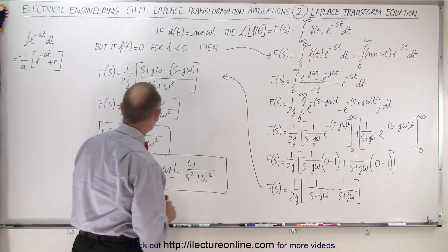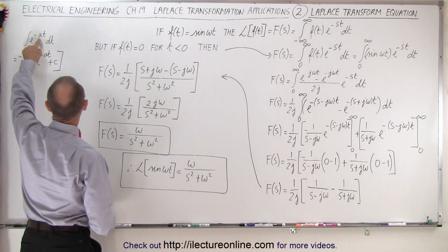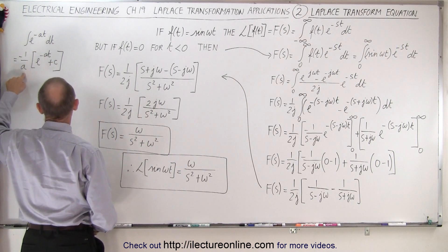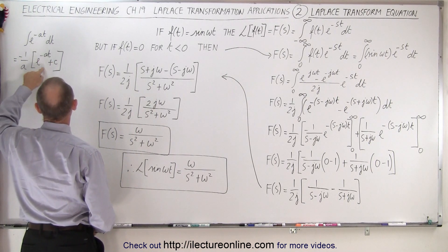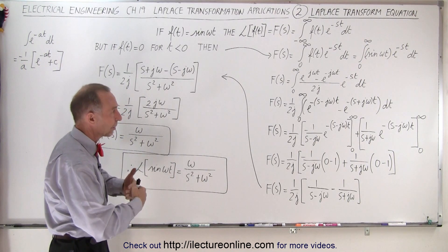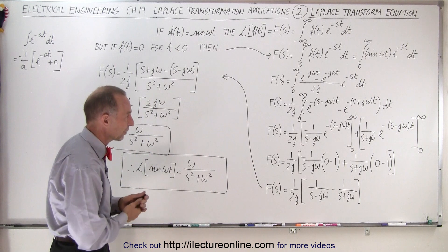So now we can integrate. Now remember when we have e to the minus some constant times t dt that is equal to negative 1 over a, the constant, times e to the minus a t plus a constant of integration. Here we leave out the constant of integration because we have the limits of integration.